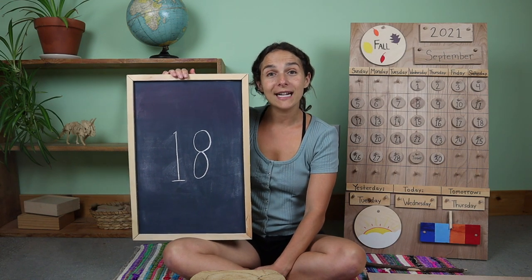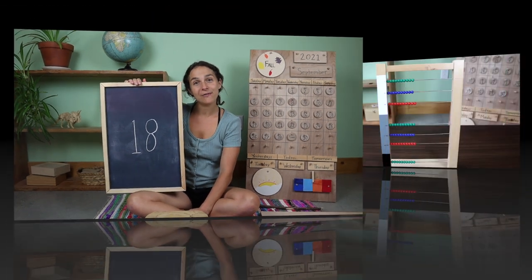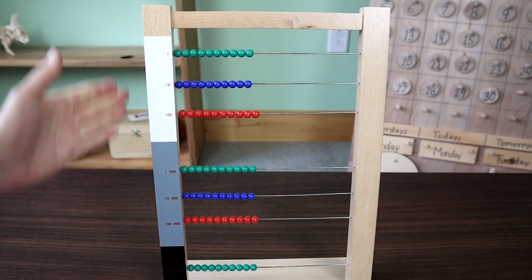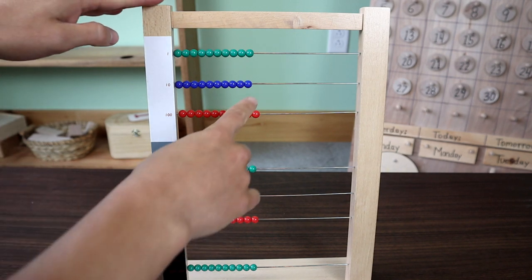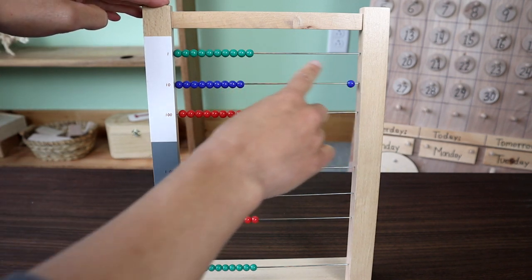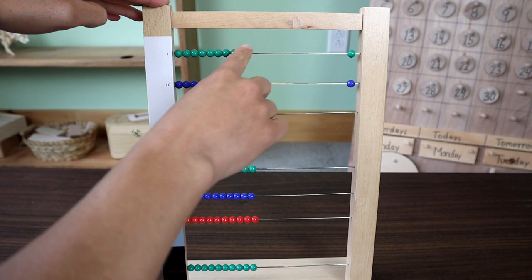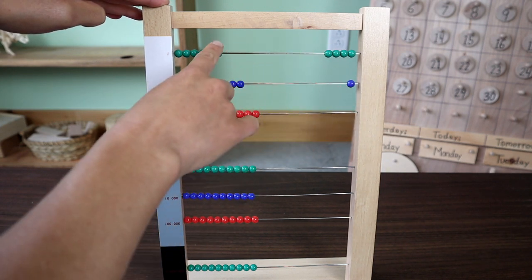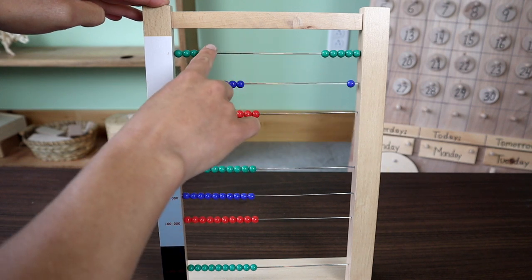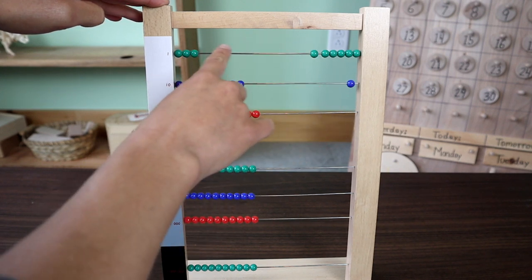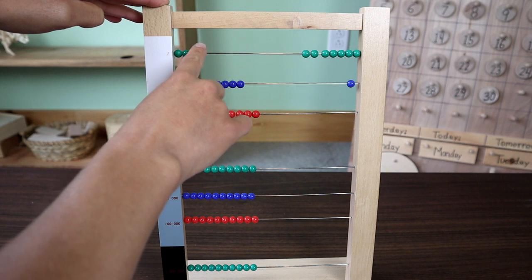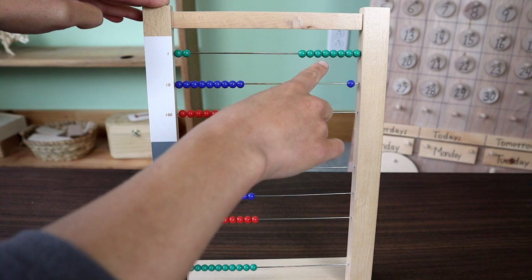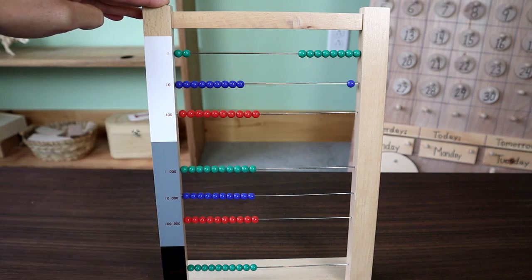Let's count to the number 18 together using the large bead frame. 10, 11, 12, 13, 14, 15, 16, 17, 18. One 10, eight units, 18.